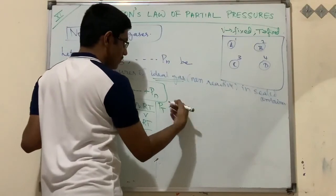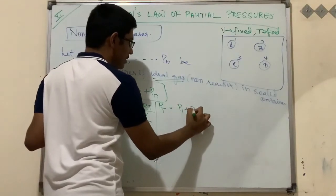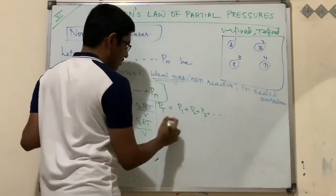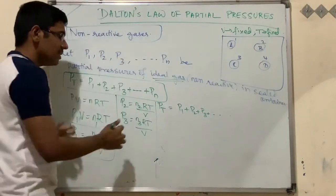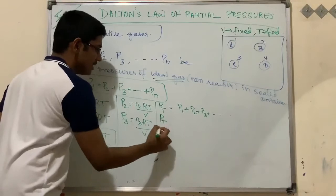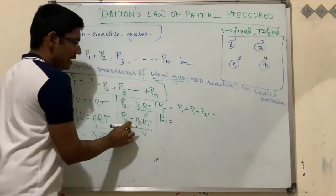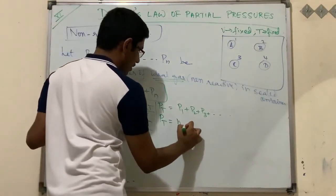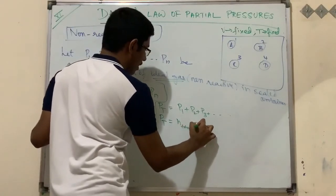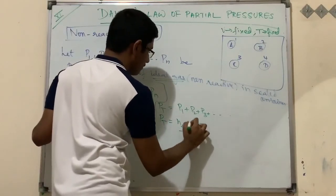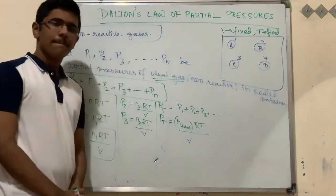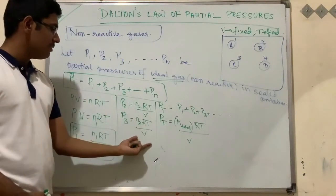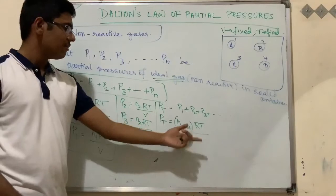Continuing the pattern, pn = nn·RT/V. For the total pressure, P_total = p1 + p2 + p3 + ... so we can write P_total = n_total · RT/V, where n_total is the total number of moles of all gases combined.